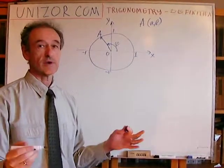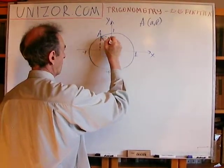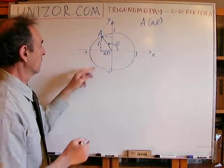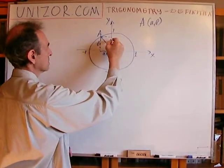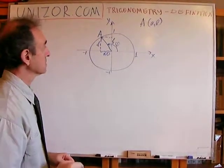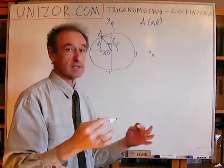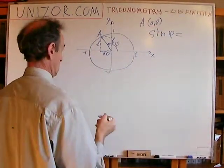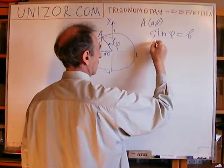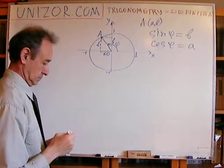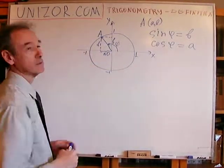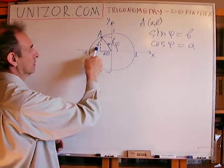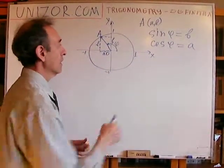Now the definition — and it's a very simple definition. This is A and this is B, because these are coordinates: A means the projection onto the x-axis, and B is the projection onto the y-axis. This is a definition — there is no explanation here, it's just a definition. Sine phi, by definition, equals B. Cosine phi equals A. Don't forget that the radius is 1. A and B are correspondingly the abscissa and ordinate of the point which represents our angle.